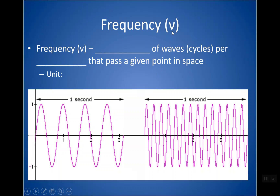Frequency, Greek symbol nu — which looks like a fancy italics V — is the number of waves that pass through a given point in space per second. The unit is unitless on top and seconds in the denominator, so the unit is either one over second, S minus one, or Hertz (Hz). These three all mean the same thing. You might see any one of them, and you should know they are equivalent.